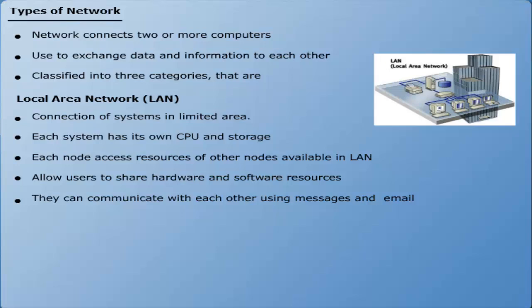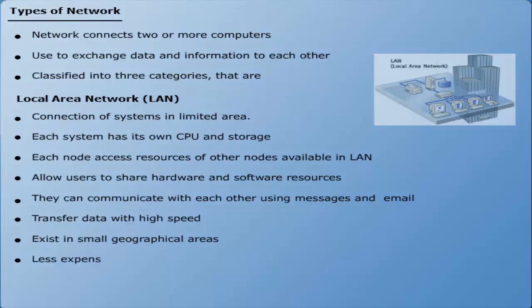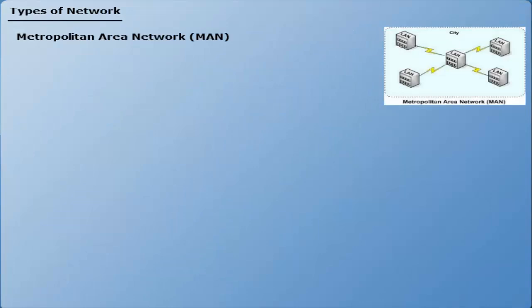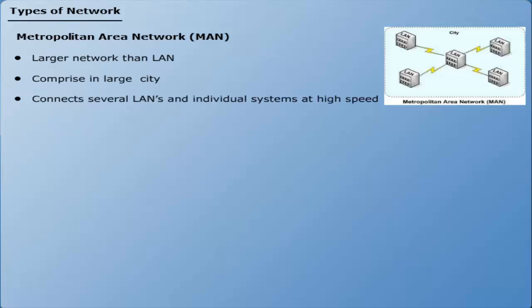LANs are characterized by the following properties: they transfer data at very high speed, they exist in a small geographical area, and the LAN technology is less expensive. A Metropolitan Area Network (MAN) is a larger network than a LAN, comprising a large city or area. It can connect several nearby LANs to one another and individual systems at high speeds.